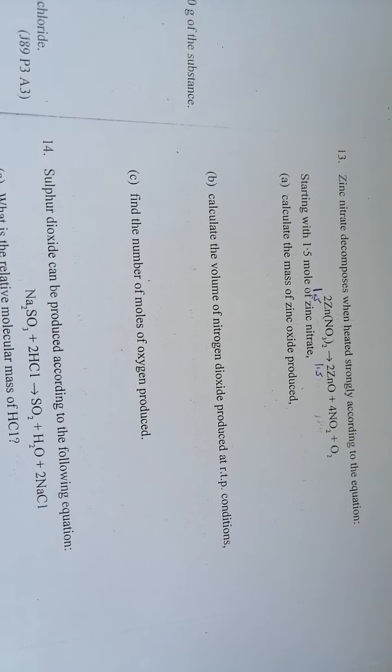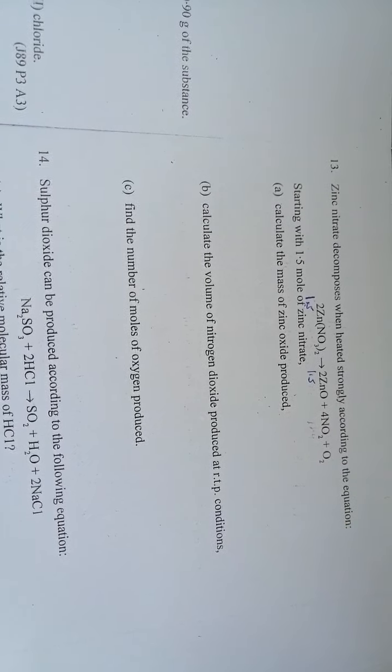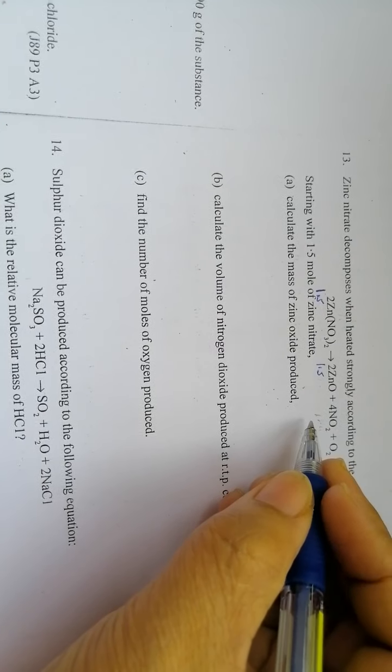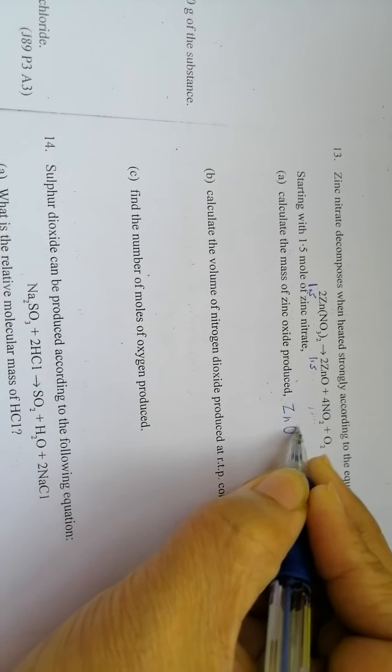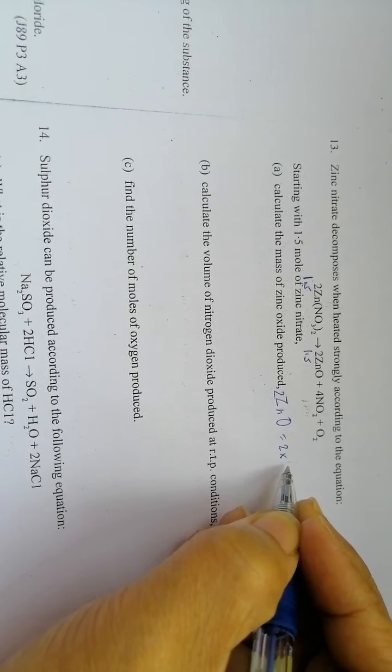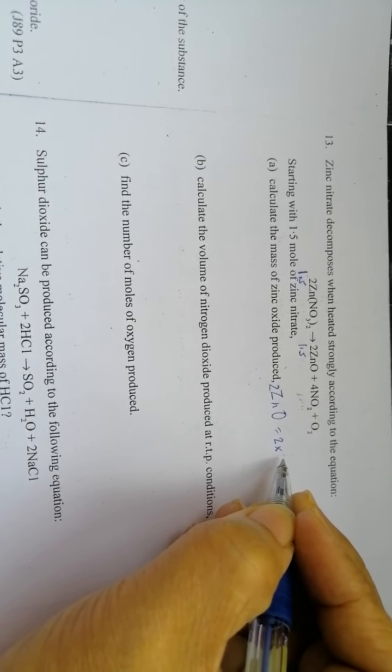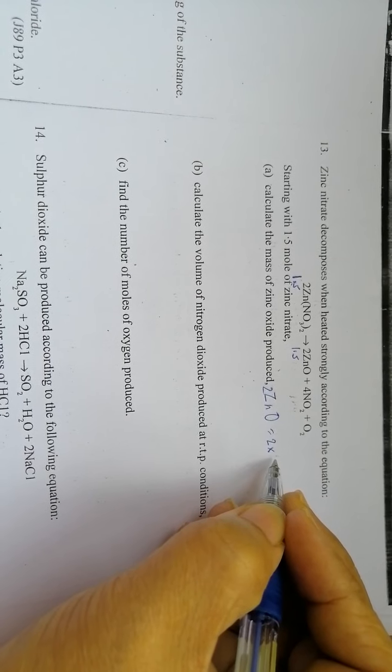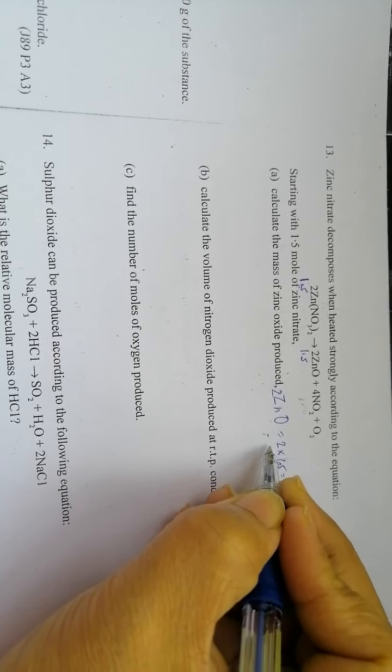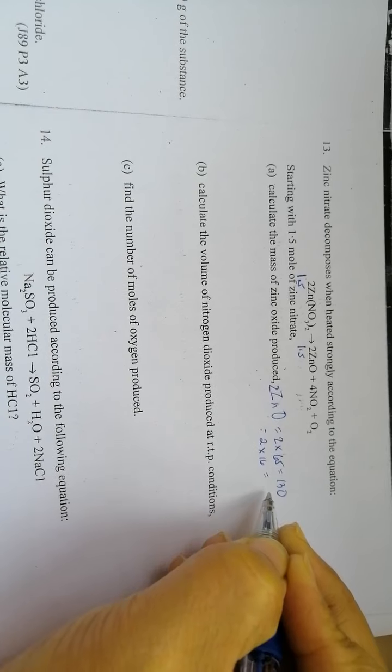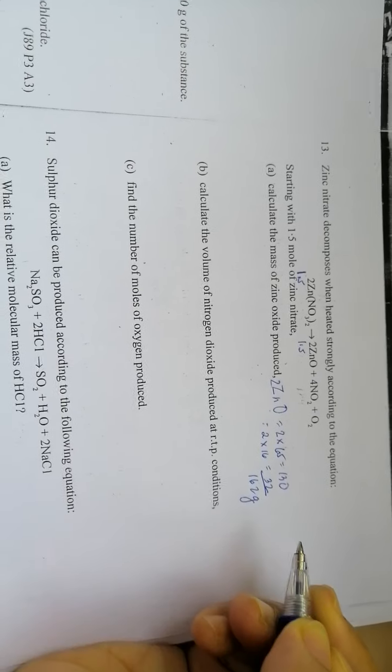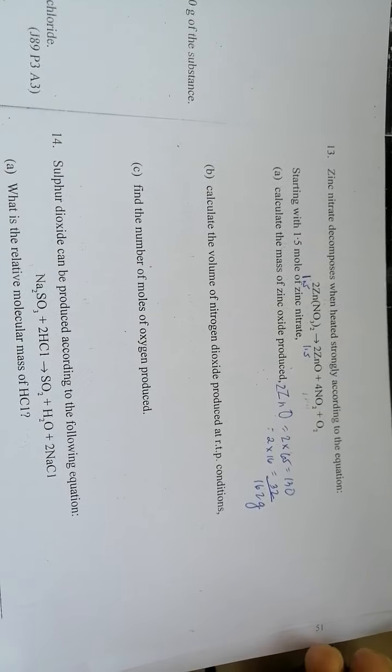The question asks to calculate the mass of zinc oxide produced. First, we calculate the mass of 2 moles of zinc oxide. Zinc oxide: 2 times the mass of zinc which is 65 equals 130. For the oxygen, we have 2 moles times 16 equals 32, which equals 162 grams if we use 2 moles.